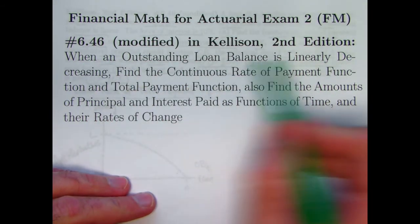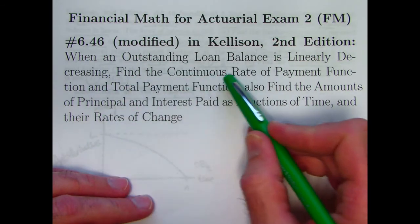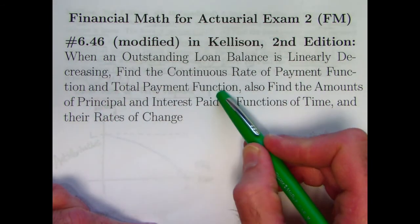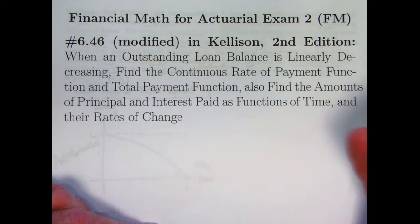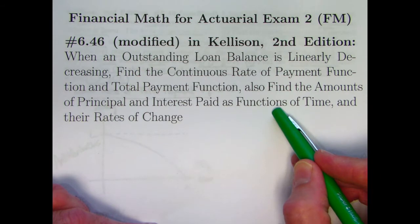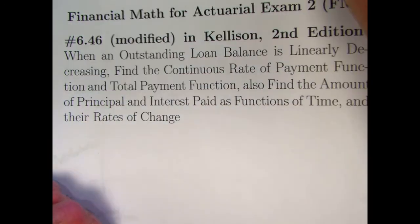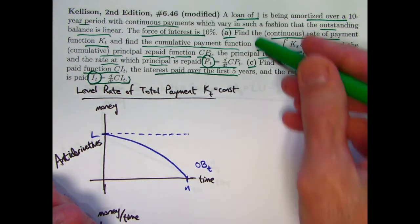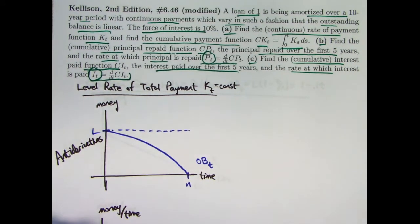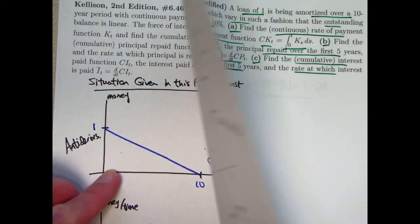When an outstanding loan balance is linearly decreasing — that's the assumption of the problem — we're going to find a bunch of things: the continuous rate of payment function KT, the total payment function which is the integral of KT not taking the time value of money into account, and the amounts of principal and interest paid as functions of time cumulatively and their derivatives. I've got some drawings pre-made already and a bunch of underlining pre-done, and this problem is going to go over two pages with some graphs on the second page.